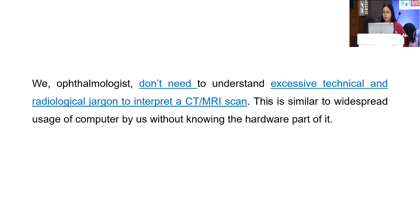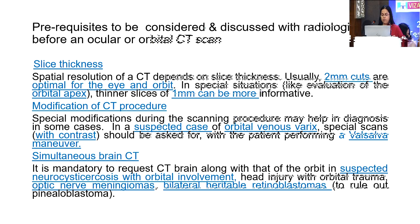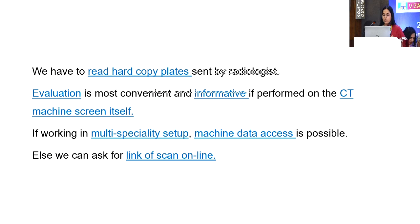We don't need to understand the excessive technical jargon of CT and MRI machines; we only need to know how to read the reports. The usual slice thickness we ask for is 2 mm cuts. Also, modifications of CT procedures include the Valsalva maneuver in suspected orbital venous varices, and simultaneous CT brain scan needed in cases of suspected neurocysticercosis with orbital involvement or bilateral heritable retinoblastoma.